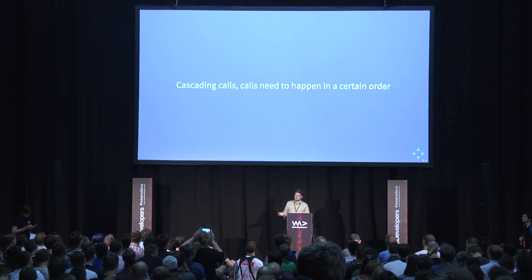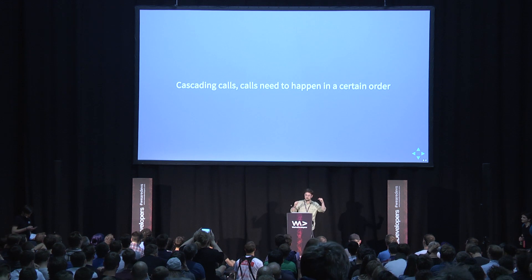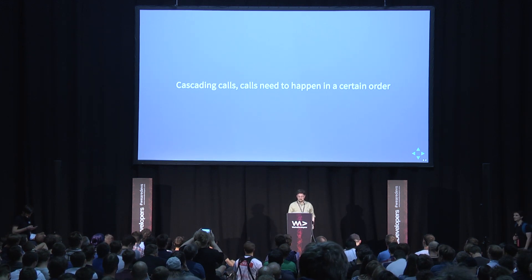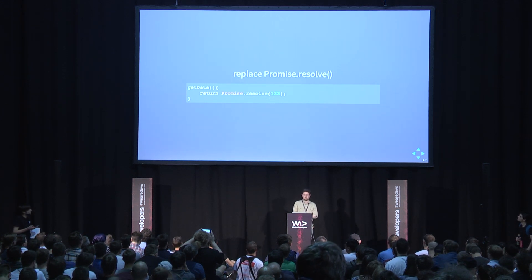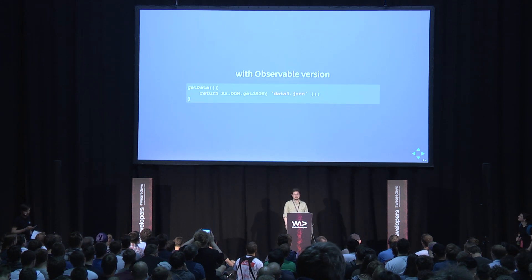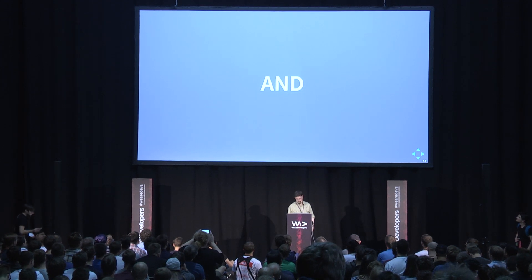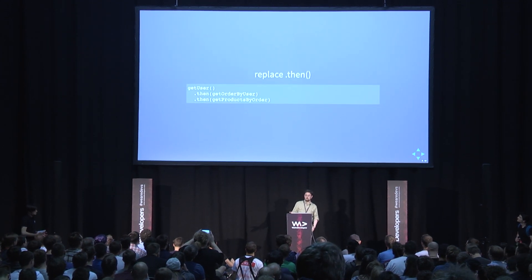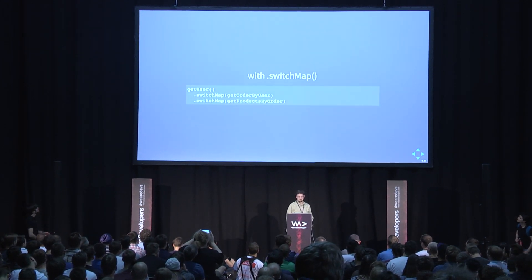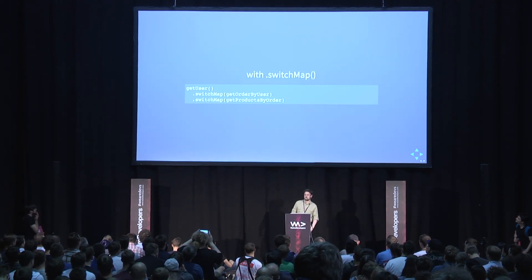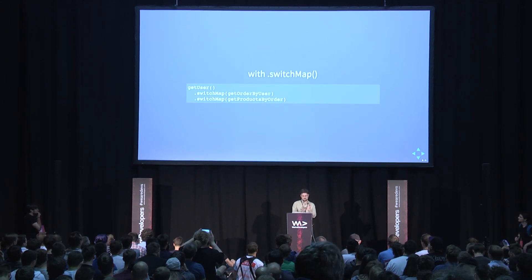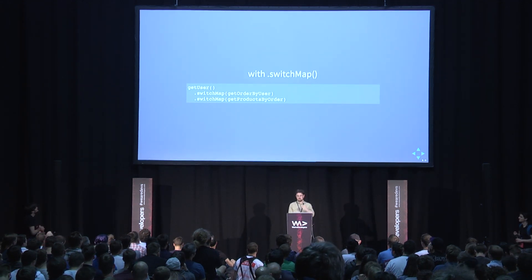For cascading calls where one call depends on another, you use promise resolve normally. In RxJS you use switchMap as the replacement for each 'then'. That's not too scary — we can easily replace cascading calls with RxJS. With switchMap you also get the ability to cancel the first stream when the precondition changes: if user one was Adam and user two is Eva, switching to Eva means we only care about Eva's cascading calls — Adam is history.